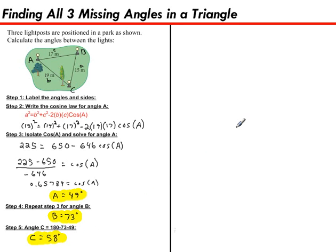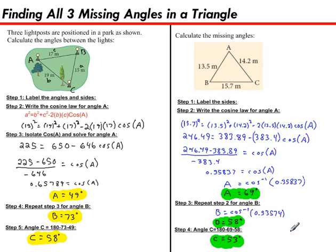And now it's your turn to practice solving for all three angles in a triangle. Let's see if you can calculate the missing angles for this triangle by using the cosine law twice and then angle sum. So follow the steps I showed on the left and we'll see how you do when you're ready. Angle A is 69 degrees. Angle B is 58 degrees. And finally angle C is 53 degrees.